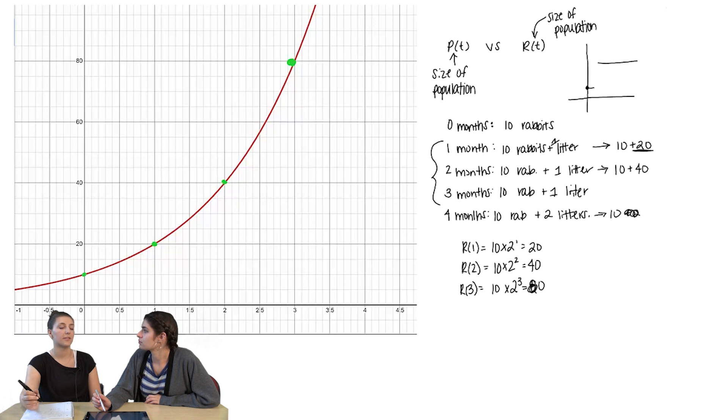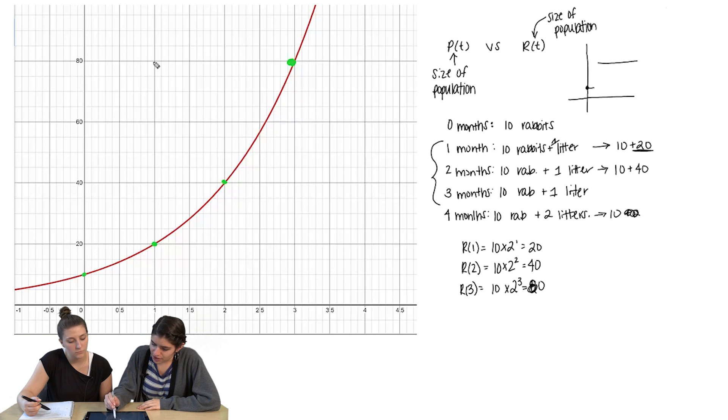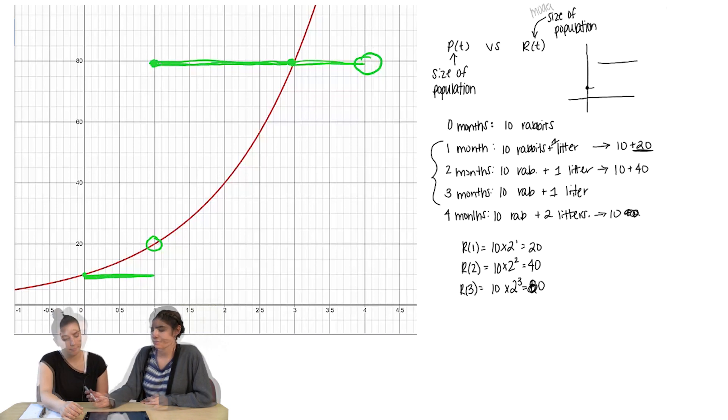But according to the way that the rabbits are mating, at three months, they shouldn't be making a new litter. So whatever is the size of the population at three months would also be the size of the population at one month. Yeah, because it happens and then it flatlines. So at one month, we should actually have the 80, and it'll flatline so that it stays at 80 rabbits at three months. Because from time zero until the month one, we only had those 10 rabbits, the females. So it was flat until month one and then it jumped up to 80.